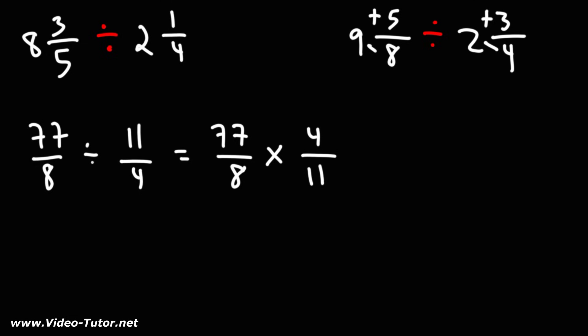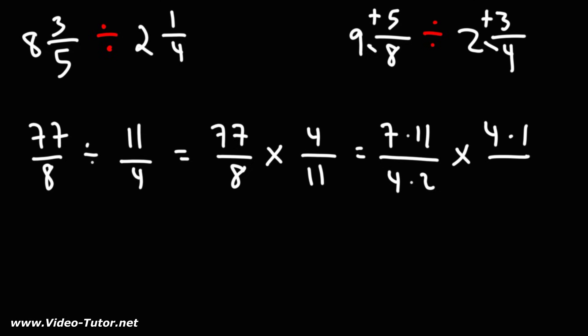So now before we multiply across, we want to see if there's anything we could cancel. 77 is 7 times 11. 8 is 4 times 2. 4, we can write that as 4 times 1. And 11, I'm going to write that as 11 times 1. So notice that we could cancel an 11, and we could cancel a 4.